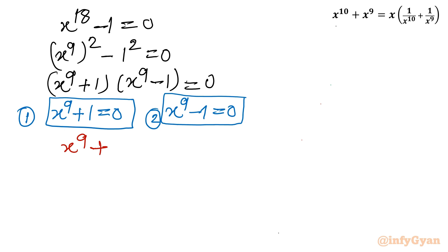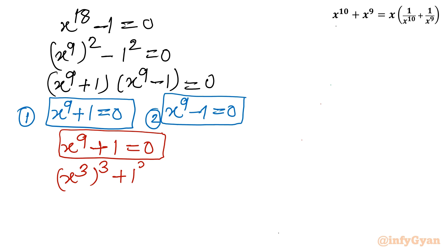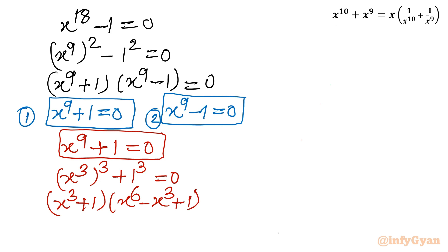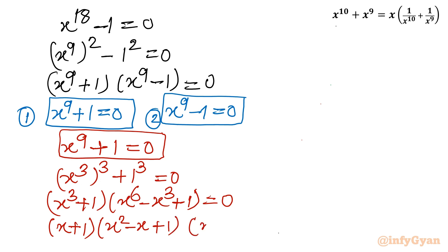Considering Equation 1: x^9 + 1 = 0. I apply the exponent property and rewrite as (x^3)^3 + 1^3 = 0. Using the sum of cubes formula a^3 + b^3 = (a + b)(a^2 - ab + b^2), this becomes (x^3 + 1)(x^6 - x^3 + 1) = 0. Then x^3 + 1 factors again as (x + 1)(x^2 - x + 1) = 0. So we have (x + 1)(x^2 - x + 1)(x^6 - x^3 + 1) = 0.